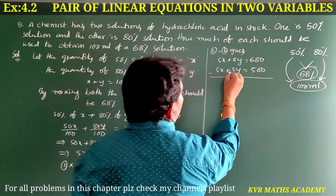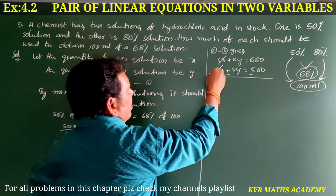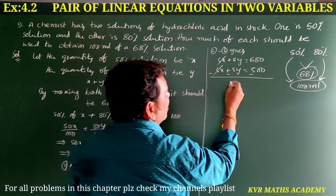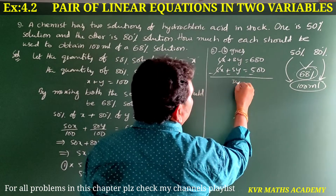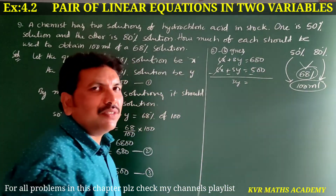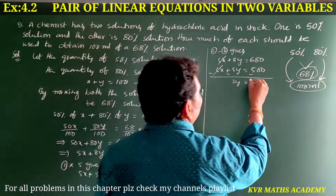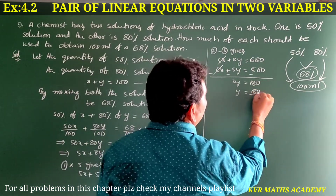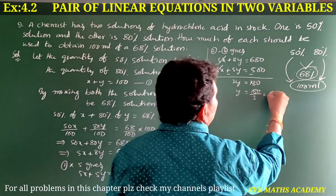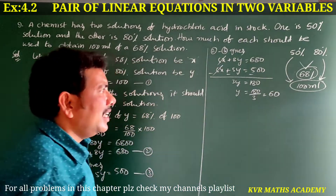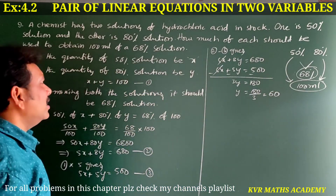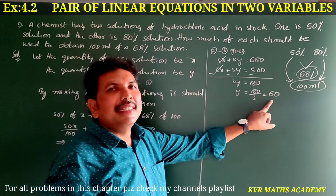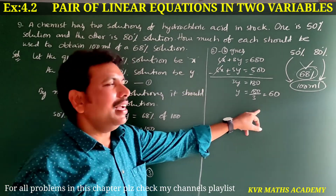Subtracting: 5X minus 5X cancels out. 8Y minus 5Y gives 3Y is equal to 680 minus 500, which is 180. Therefore Y is equal to 180 divided by 3, which is 60. So Y equals 60.